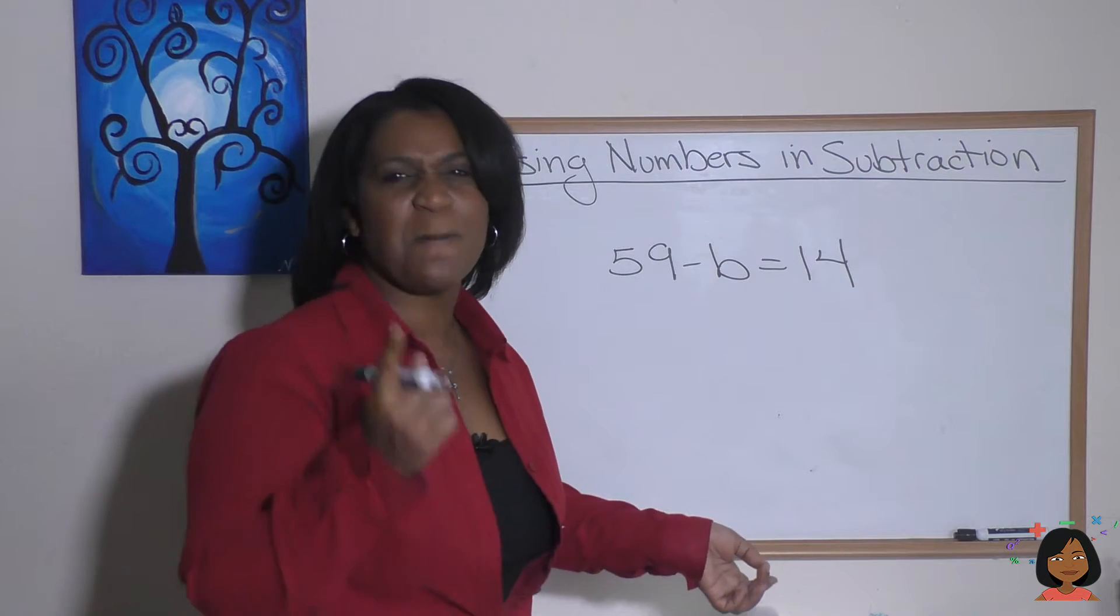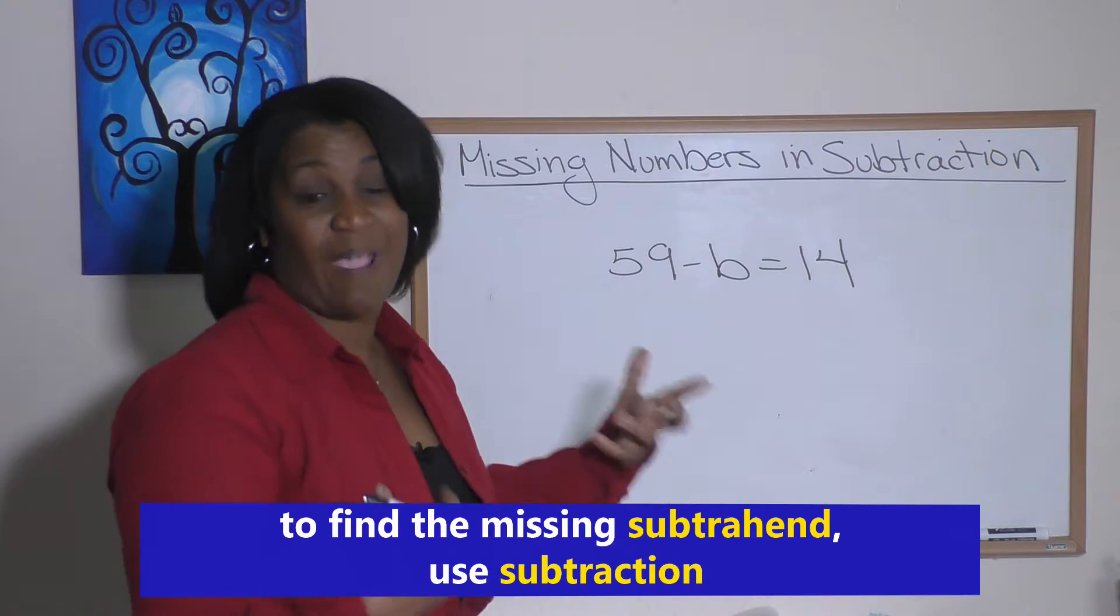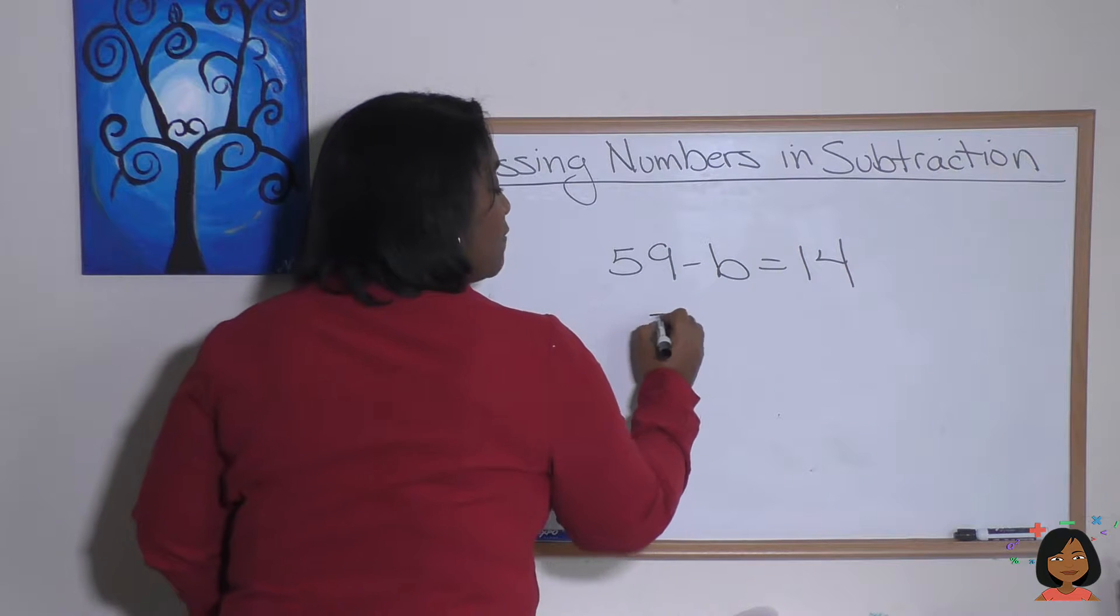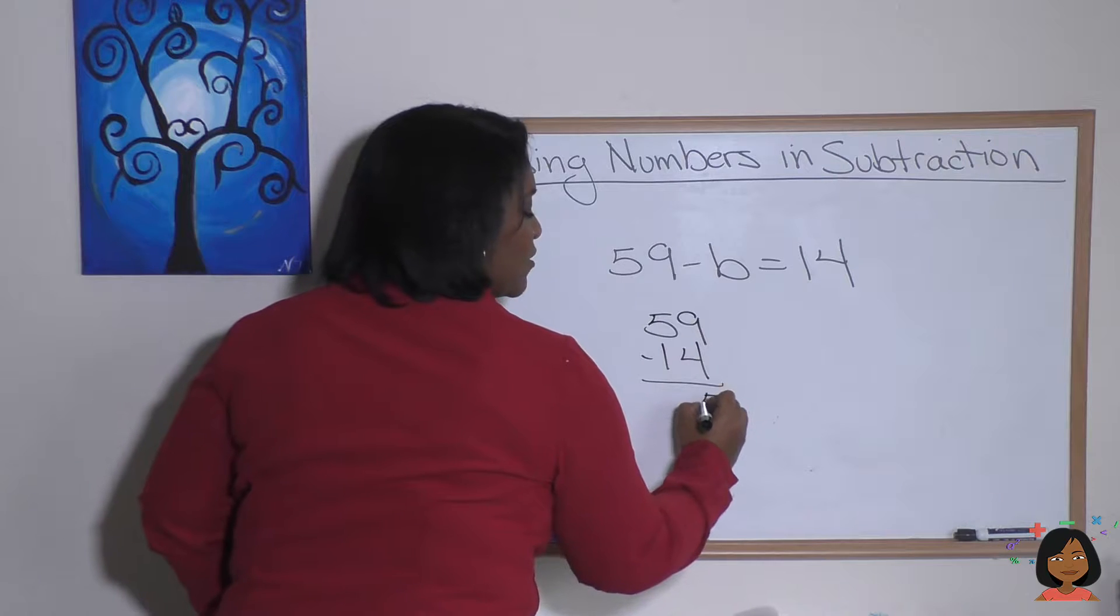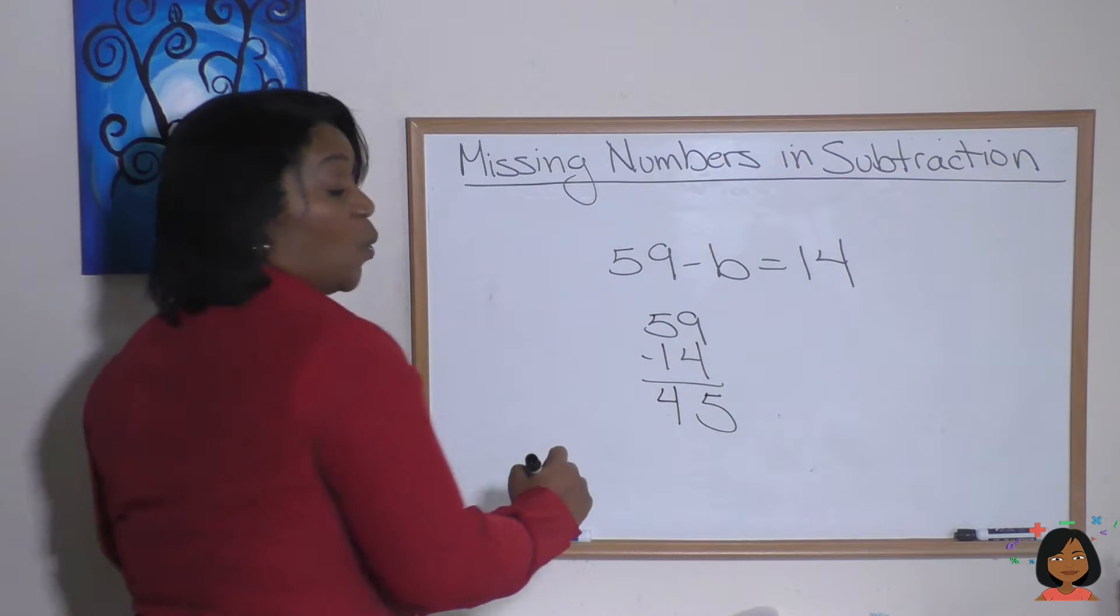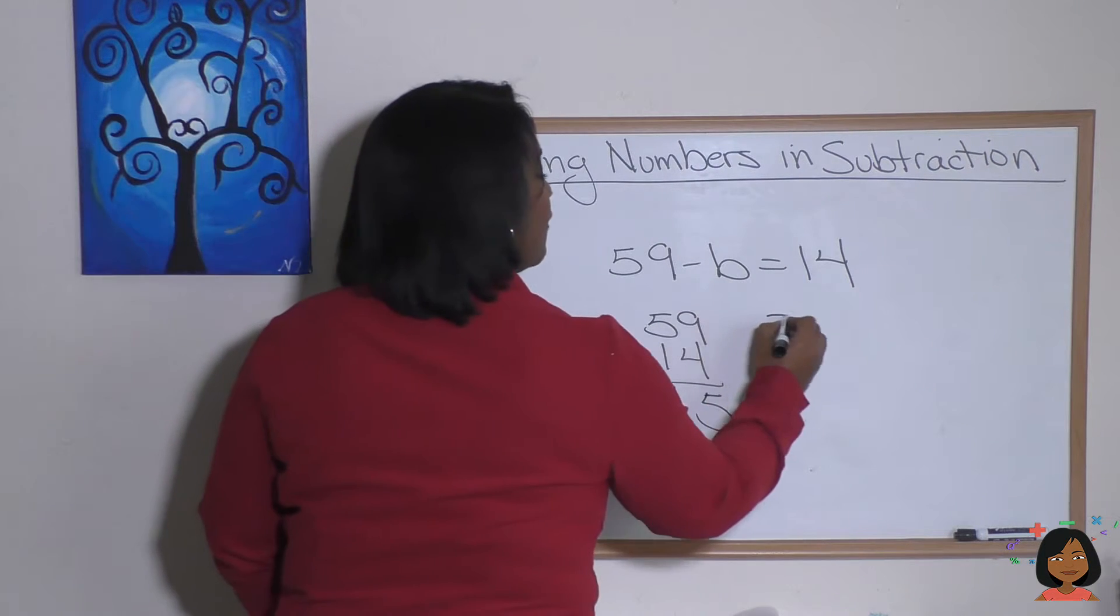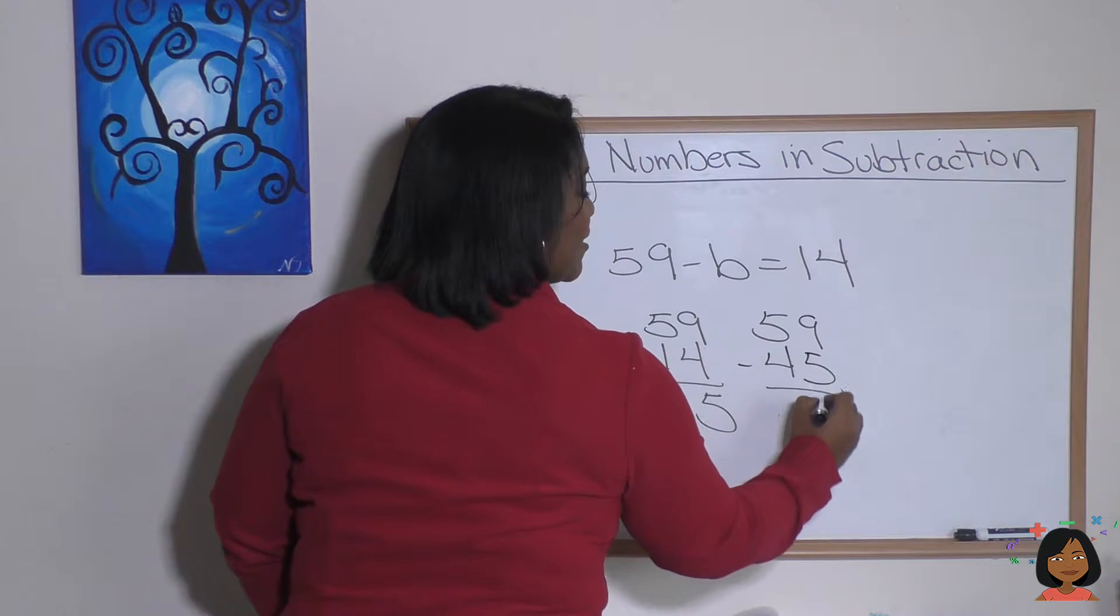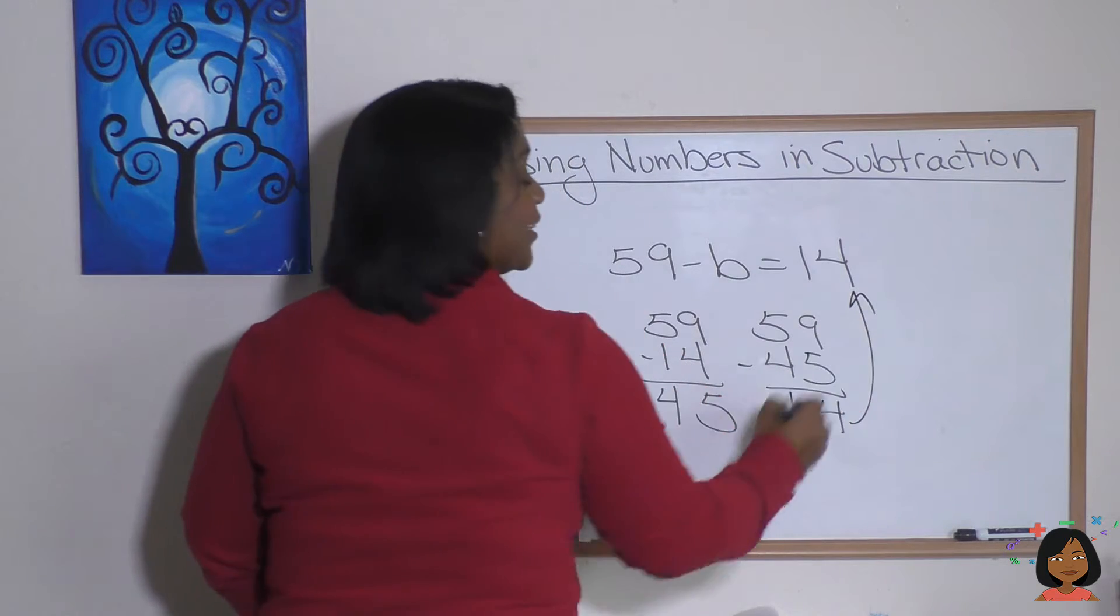So when we have a missing subtrahend, we need to do more subtraction to find the answer. Watch: 59 minus 14. Nine minus four is five, five minus one is four. We're going to put this back into our equation to see if it works.